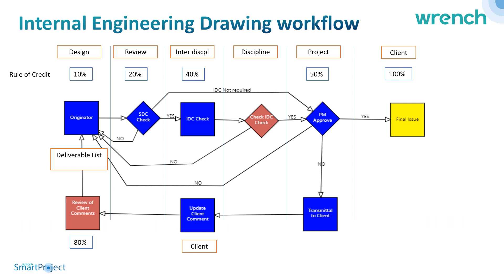Each deliverable can be specified with a predefined workflow defined as per the organization's process. In this example, a drawing originates in one discipline, is reviewed in the same discipline, then goes through an interdisciplinary check, then to the project manager, and is submitted to the client. For each stage you can specify the responsible resource and define a weightage — called rules of credit — so that when you complete an activity you earn that progress.